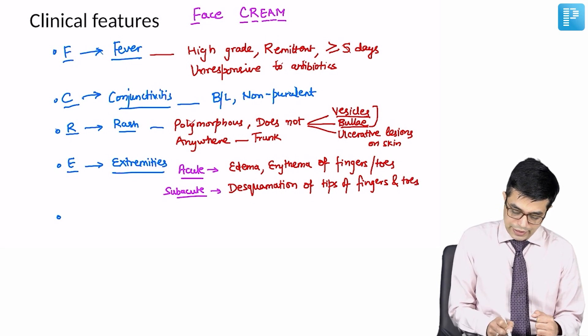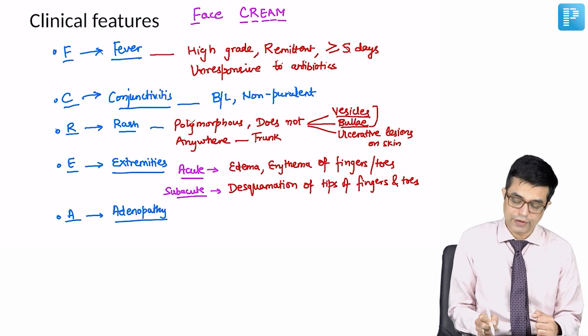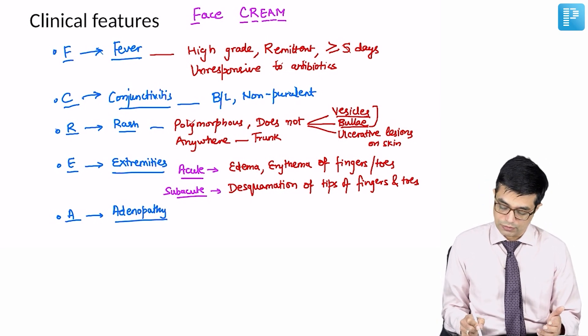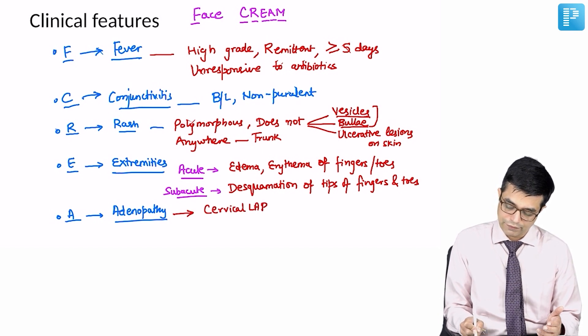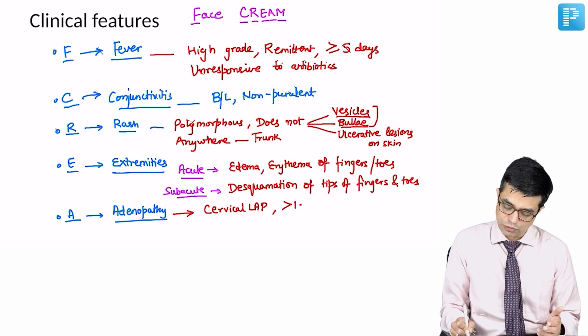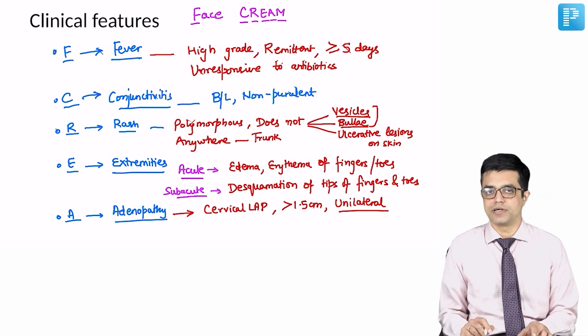A stands for adenopathy, which is cervical lymphadenopathy. Kawasaki disease children have cervical lymphadenopathy with size more than 1.5 centimeters and it is always unilateral. Bilateral cervical lymphadenopathy is not a feature of Kawasaki disease.